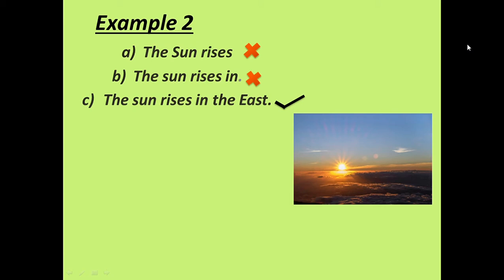First, you read these groups of words. The first two groups of words, A and B, do not make complete sense. The third group of words, C, makes complete sense.